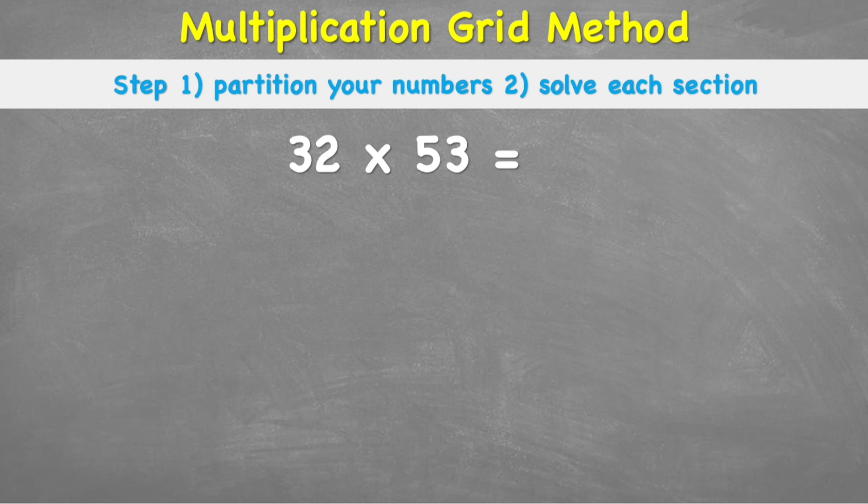So what does partitioning our number mean? Well, we have the question 32 multiplied by 53. And at the moment, that's a really difficult question because 32 and 53 is very hard to see how they multiply. But what we can do is we can understand that 32 is actually just a 30 and a 2. And 53 is the same as saying 50 and a 3. So we have just partitioned our number. We've broken it down into its tens and its ones.